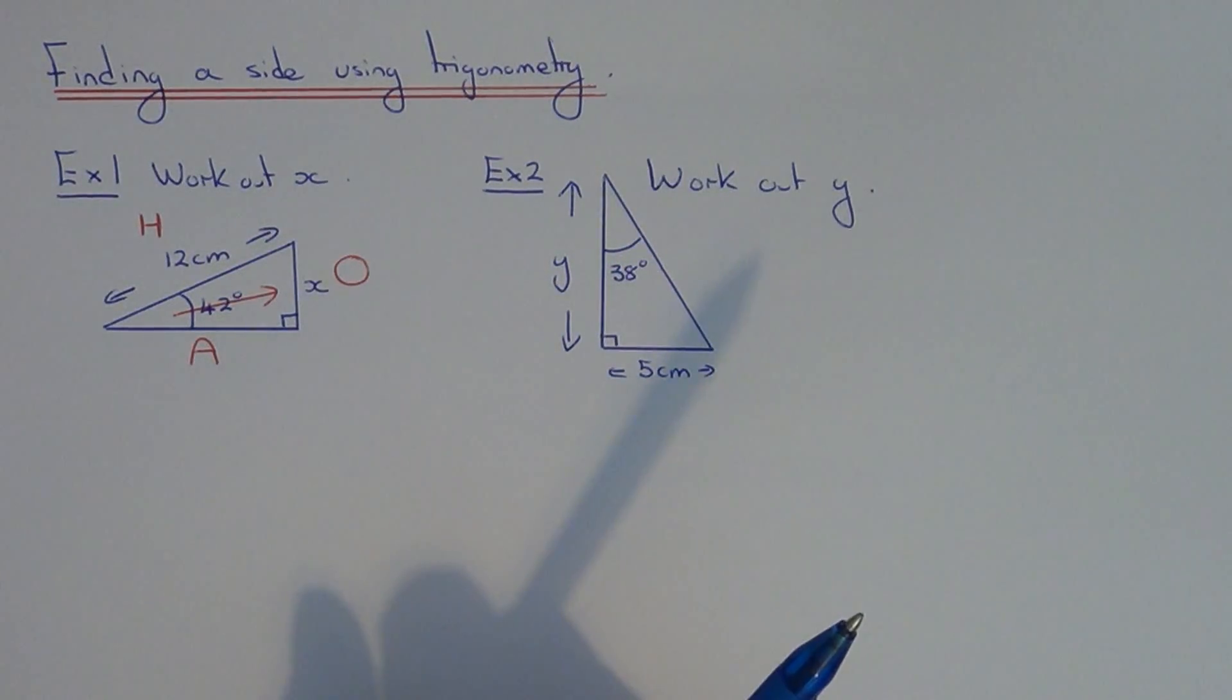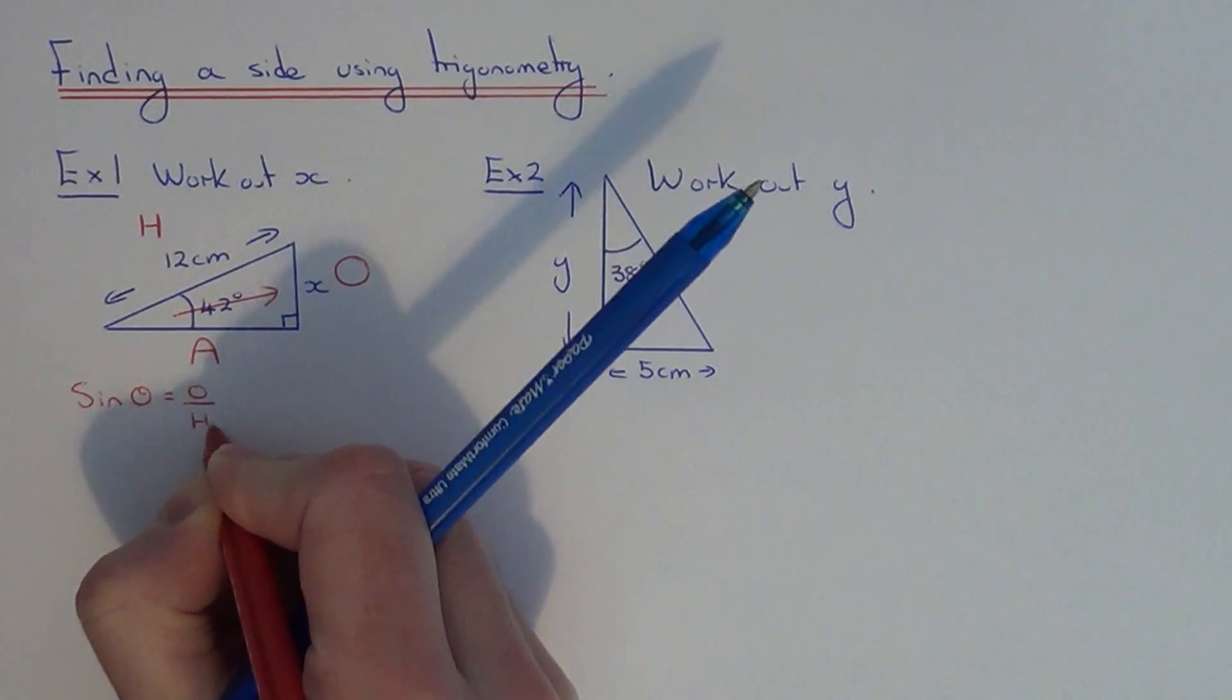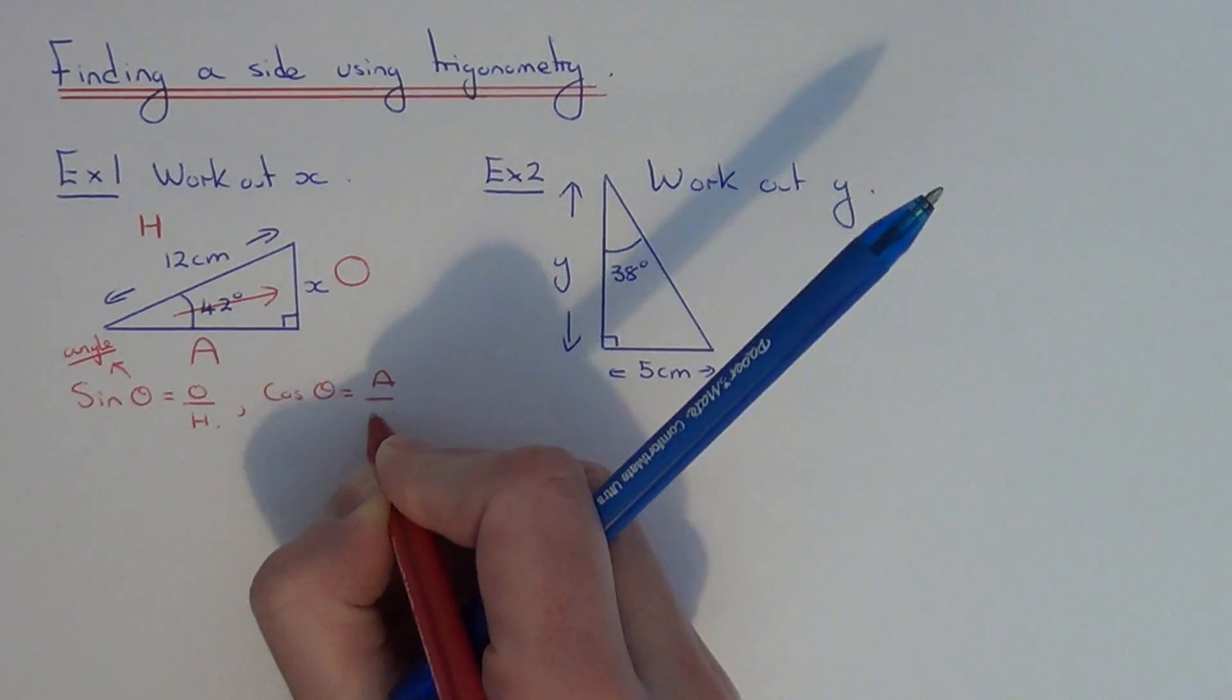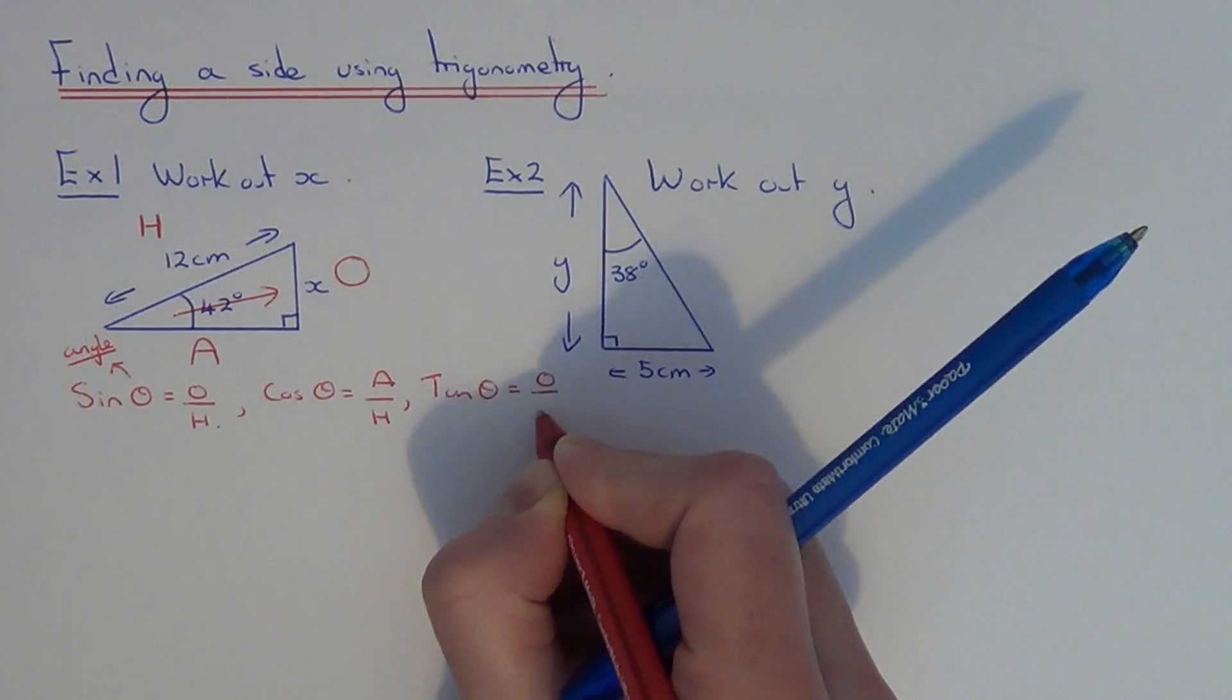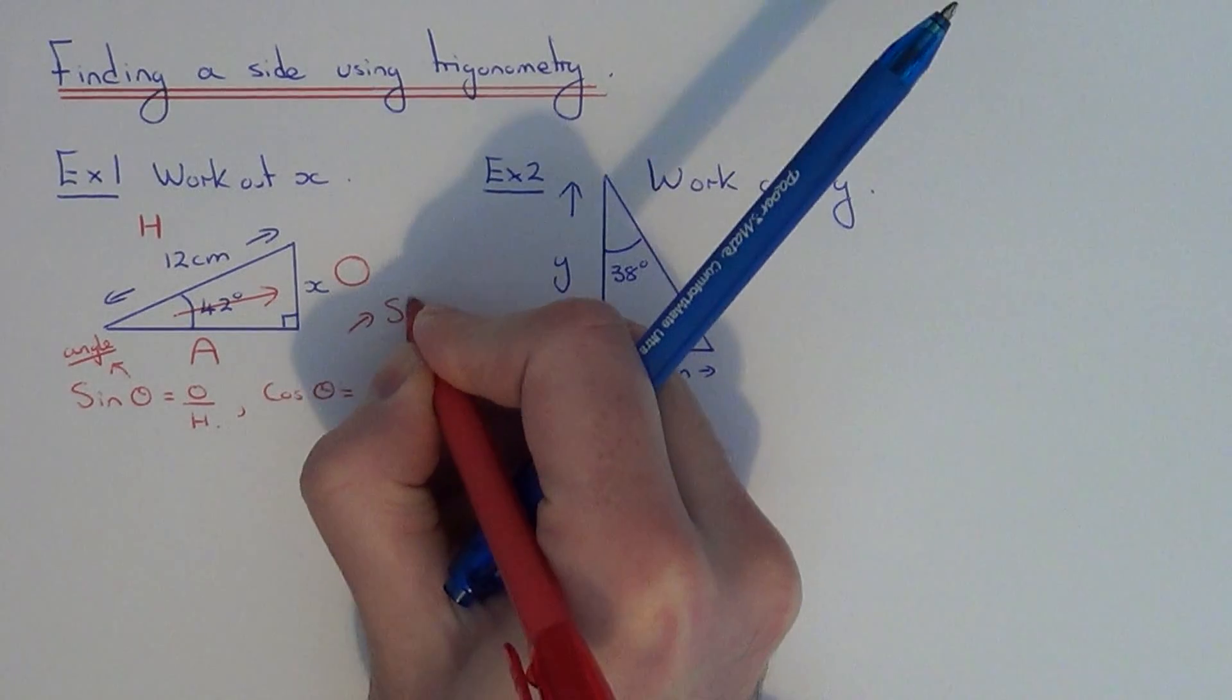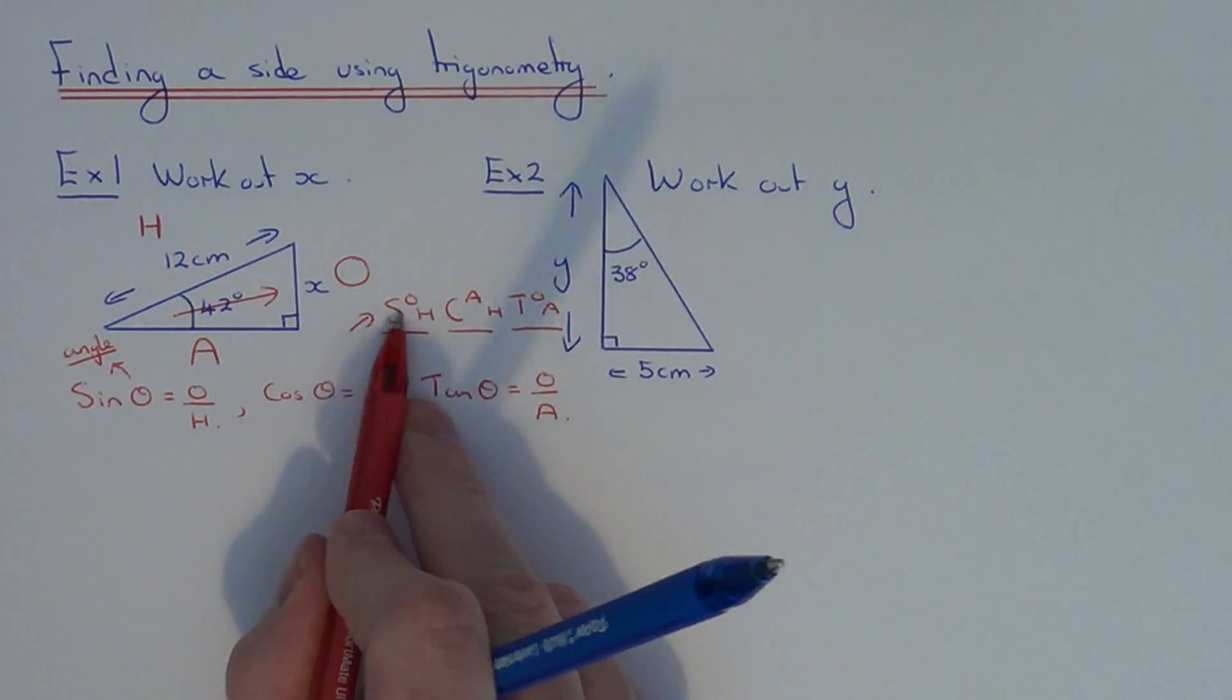We now need to decide which one of our three trig formulas to use. Our three trig formulas are: sin θ equals opposite over hypotenuse—theta stands for the angle. Then we have cos θ equals adjacent divided by the hypotenuse. And the third trig formula is tan θ equals opposite divided by the adjacent. If you're having trouble remembering these three formulas, you can use the word SOHCAHTOA. So you've got sin, cos, and tan.